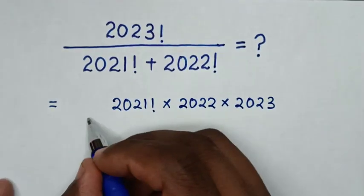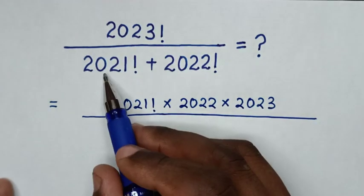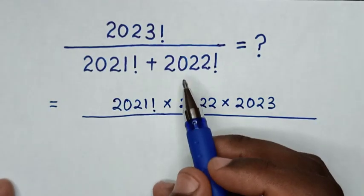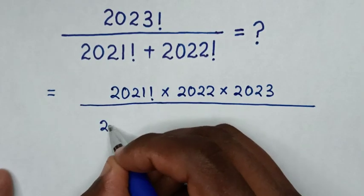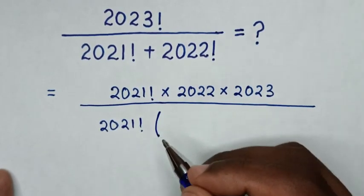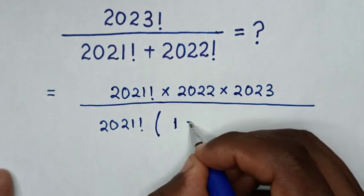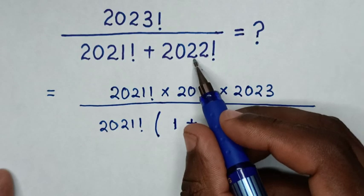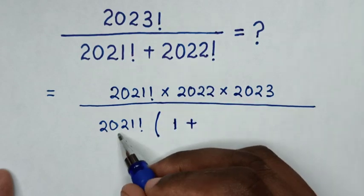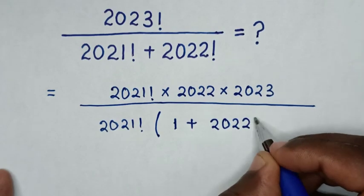Then over - from the denominator, 2021 factorial is common. So we take 2021 factorial out of the bracket, then this divided by this is 1, plus 2022 factorial divided by 2021 factorial is 2022.